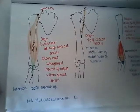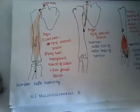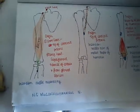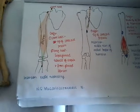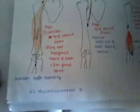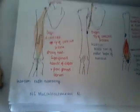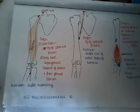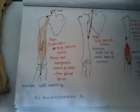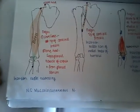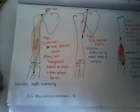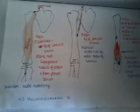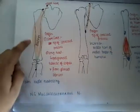Hello friends, welcome to a new lecture in anatomy. Right now I would like to discuss the muscles of the anterior compartment of the upper limb. The muscles of the anterior compartment of the upper limb are mainly three.